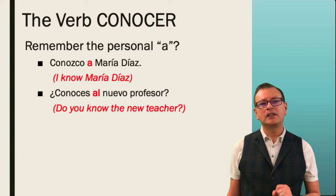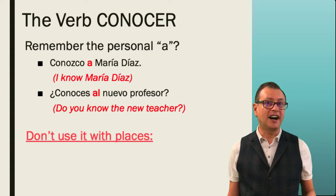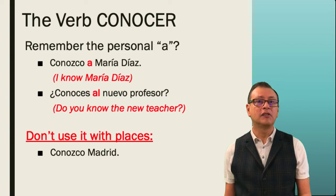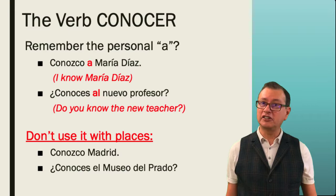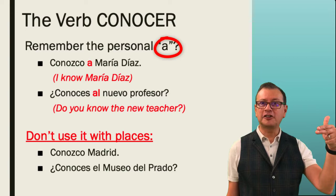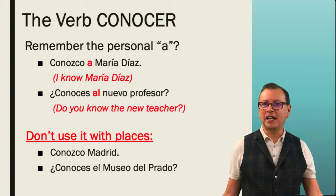When we know or are acquainted with a place, we don't use that 'a' anymore. 'Conozco Madrid' means 'I've been to Madrid, I know what it is like.' And '¿conoces el Museo del Prado?' — do you know that museum? Notice at the top we require 'a' because we refer to knowing someone, and at the bottom no 'a' because you are just knowing a place. Very simple, ¿verdad?